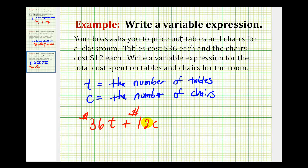Again notice how I did include the units of dollars in the expression. If we wanted to leave the units out it would just be 36t plus 12c, given that we assume the units would be in dollars.